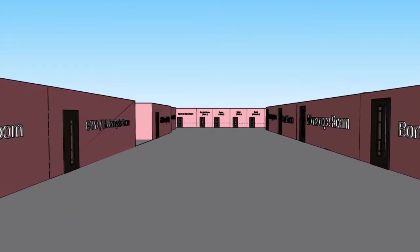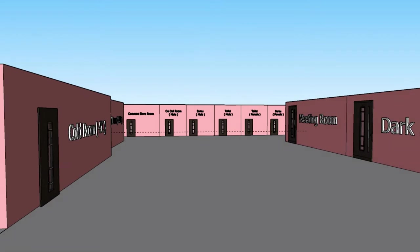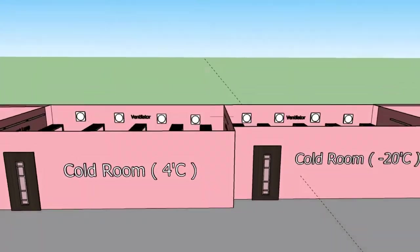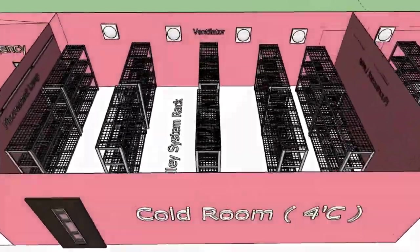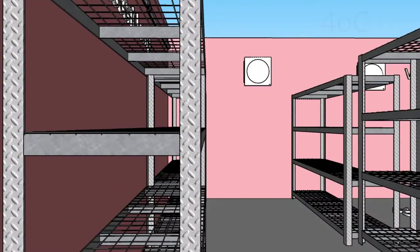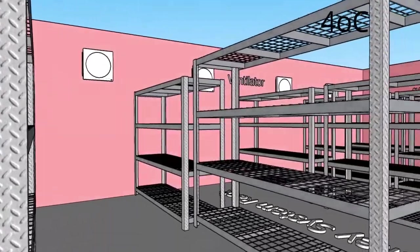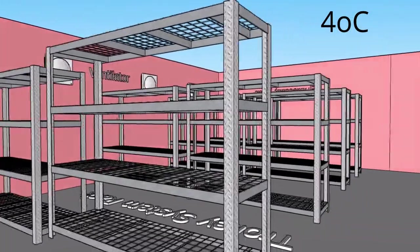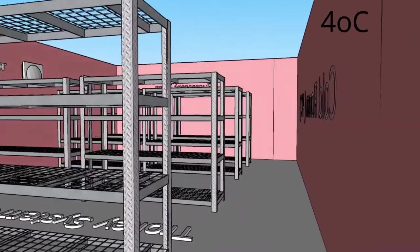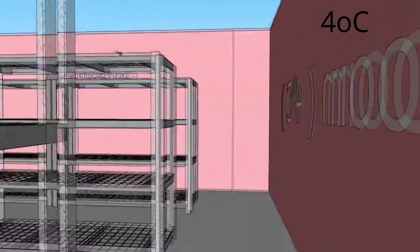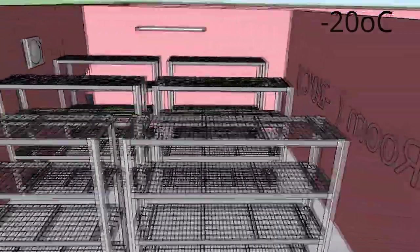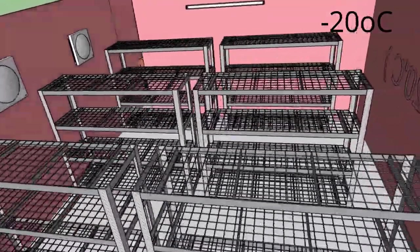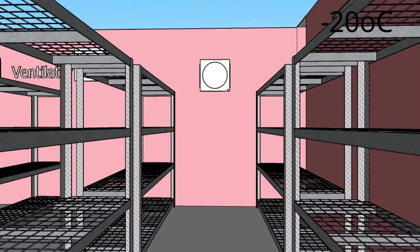Next is the storage section, which consists of three rooms: the cold room, chemical room, and common room. The cold room stores reagents and patient samples and is divided into two compartments: a 4°C compartment and a -20°C compartment. The 4°C compartment is dedicated to storing patient samples such as bone marrow aspirates, blood, and plasma, along with certain reagents. The -20°C compartment stores patient serum, urine, and specimens requested for special or cold blood tests.